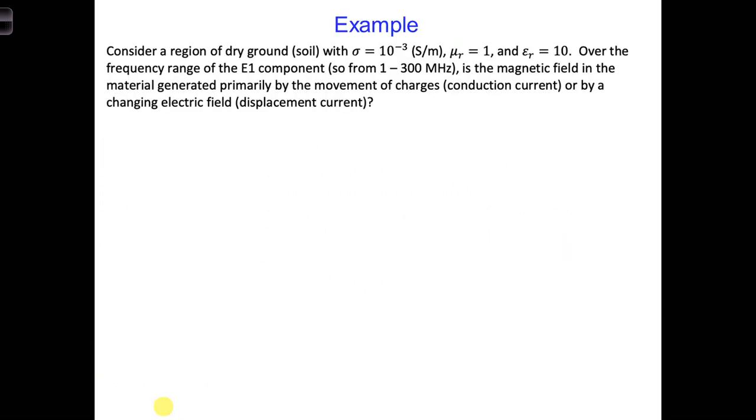All right, let's work through an example. Let's consider a region of dry soil. For example, maybe we'll consider this to be the ground that is underneath our transmission line. Sigma, mu, and relative mu are given. So over the frequency range of the E1 component, we're going to go from 1 to 300 megahertz. We want to know, is the magnetic field in the material generated primarily by the movement of charges, the conduction current, or by changing electric fields, displacement current?